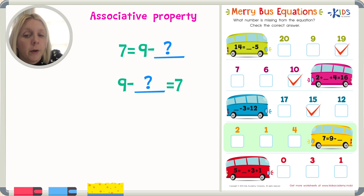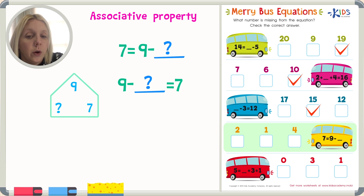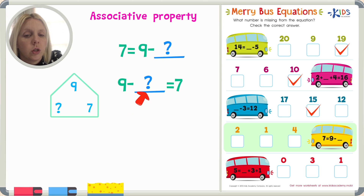Seven equals nine minus something. Because this is confusing, I always want that one number off to the right, so I'm going to rewrite it as: nine minus something equals seven. I've got a subtraction problem. The first number is going to be the biggest number. In my number family house, nine is my biggest number so he goes on top. The next number I don't know, and then I've got a seven. I can't solve it like this — I have to change it so that the unknown number is at the end. I'm going to do nine minus seven equals the unknown number.